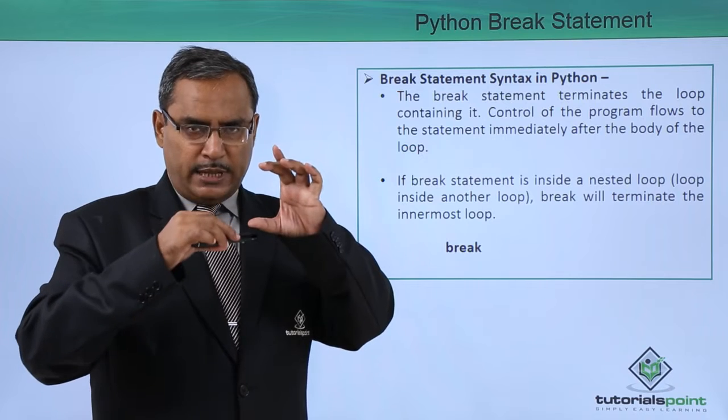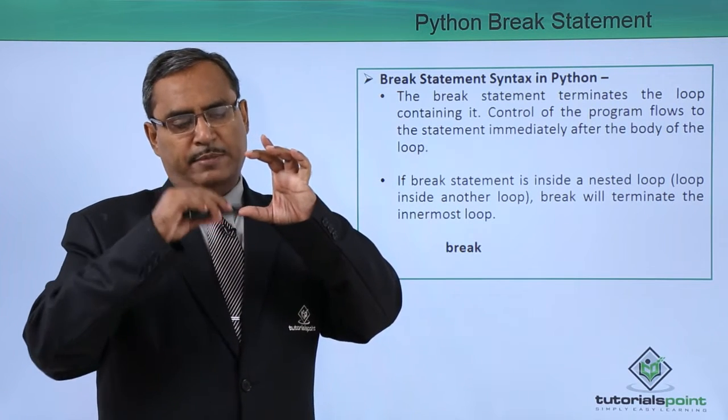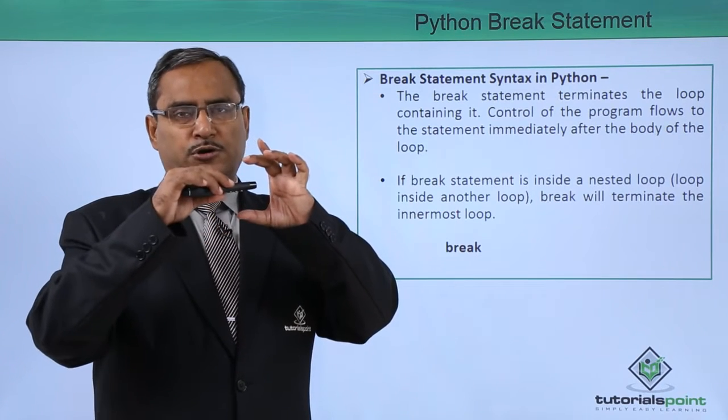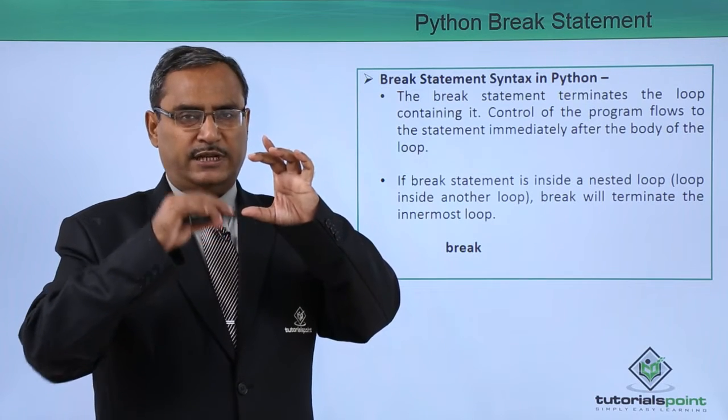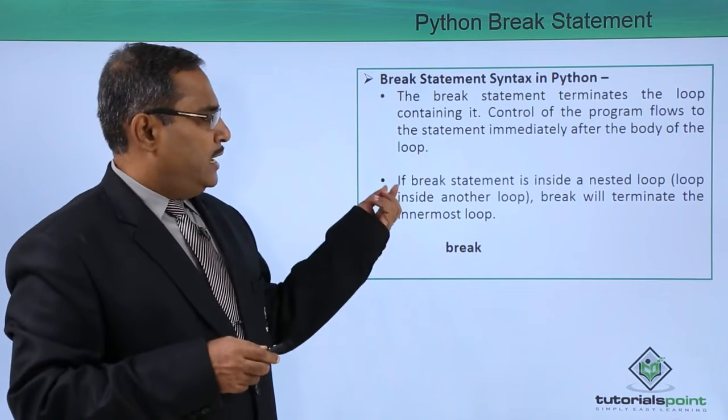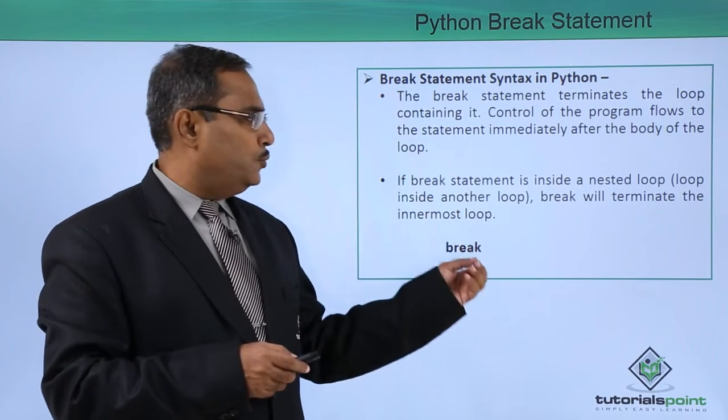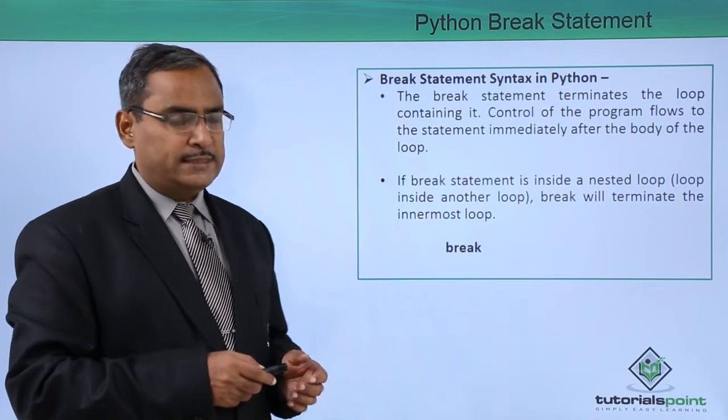When the break will get executed, then the next statement after the loop will get the control. That immediate statement after this loop body will get the control because the control will coming out from this loop and it will come to the line which is just after this loop construct. If the break statement is inside a nested loop, then break will terminate the innermost loop and control will come to the outer loop in that case.